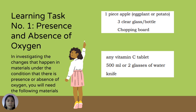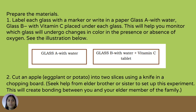Learning Task 1: Presence and Absence of Oxygen. In investigating the changes that happen in materials under the condition of presence or absence of oxygen, you will need the following materials: 1 piece of apple, eggplant, or potato; 3 clear glass bottles or a chopping board; any vitamin C tablet; 500 ml or 2 glasses of water; and a knife. Label each glass — Glass A with water and Glass B with vitamin C — to monitor which glass undergoes color changes.